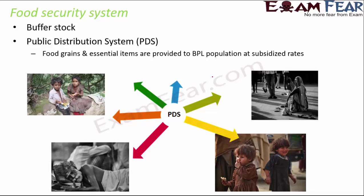The stocked food grains are then distributed to the Below Poverty Line population at subsidized rates. So the function of PDS is to distribute food grains stocked by FCI to the eligible population — the BPL population. Unfortunately in India, many people who are actually below the poverty line are not included in the BPL list, while some above-poverty-line people get included, making correct segregation very tricky but essential.